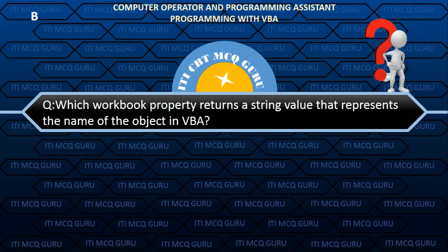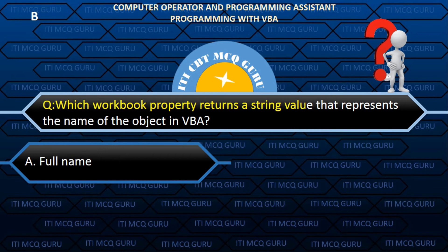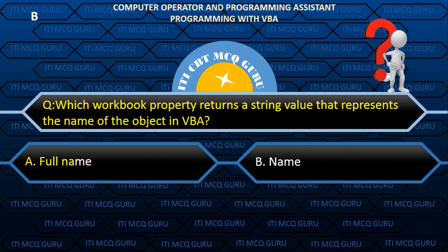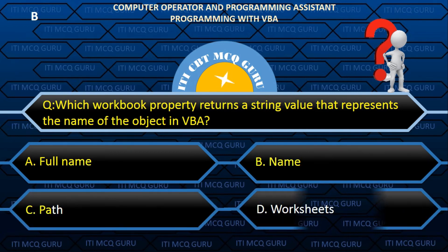Which workbook property returns a string value that represents the name of the object in VBA? Answer: D. Name.